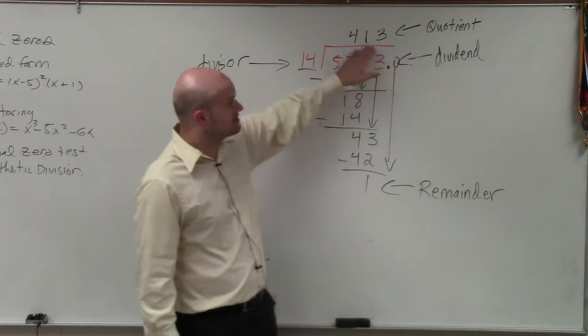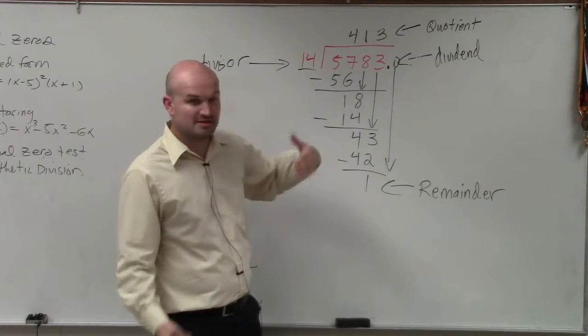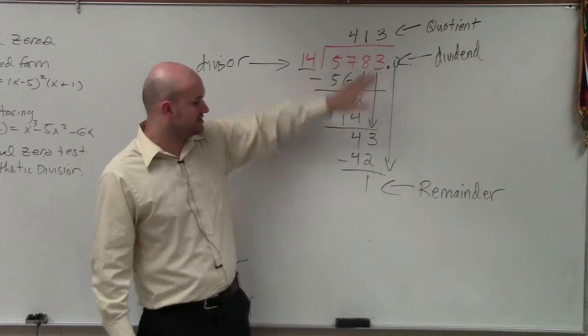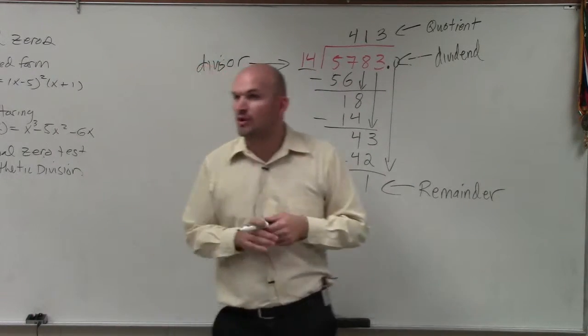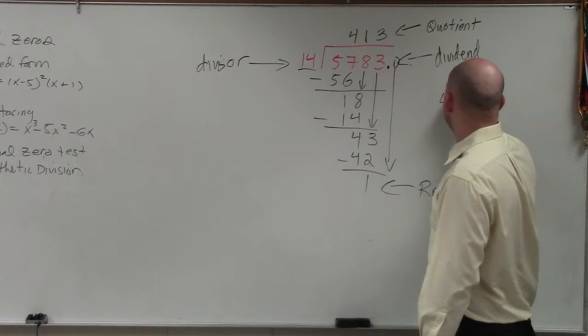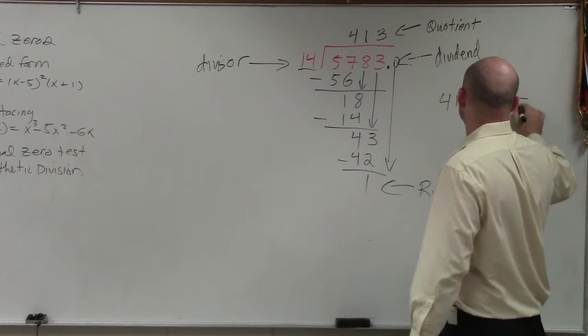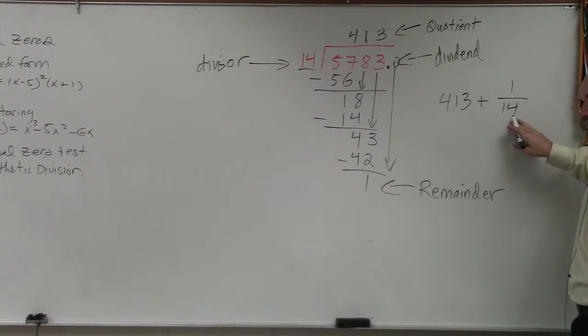So the answer is the quotient plus the remainder divided by the divisor. The quotient is 413 with a remainder of 1. There's a couple things I might ask you to do. One would be, what exactly is the answer? When we write the answer, we take the quotient plus the remainder over the divisor.